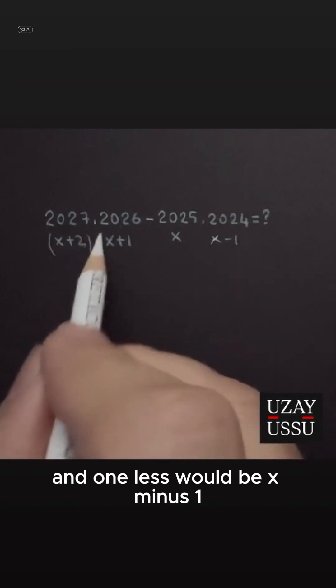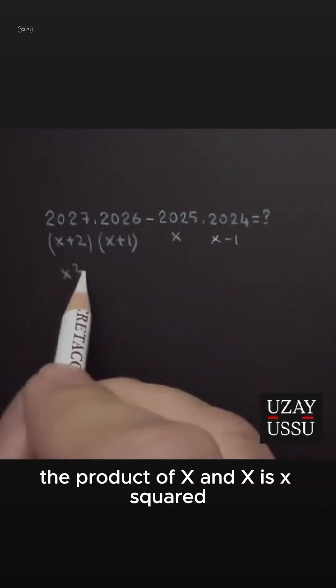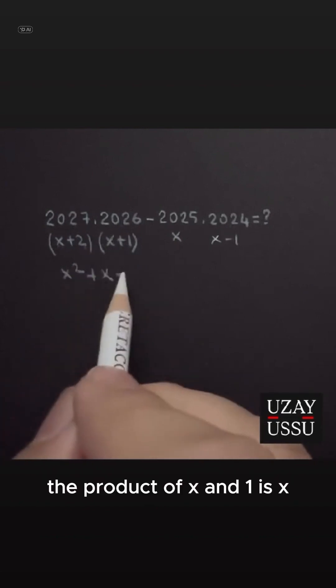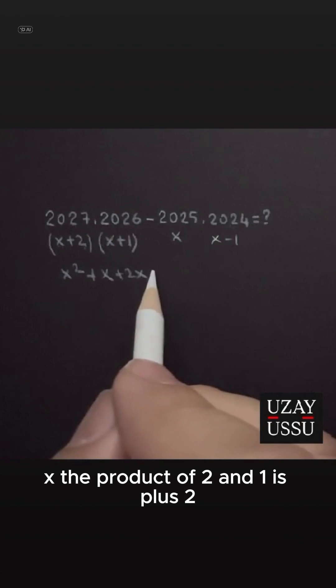Now let's multiply these. The product of x and x is x squared. The product of x and 1 is x. The product of 2 and x is 2x. The product of 2 and 1 is plus 2.